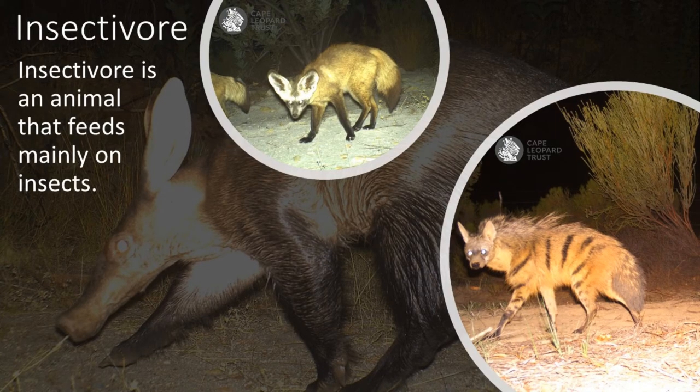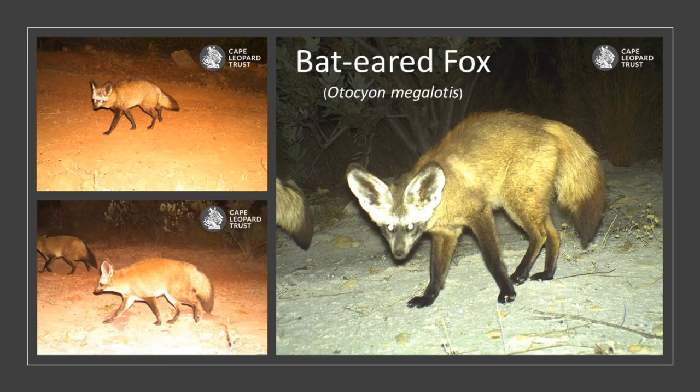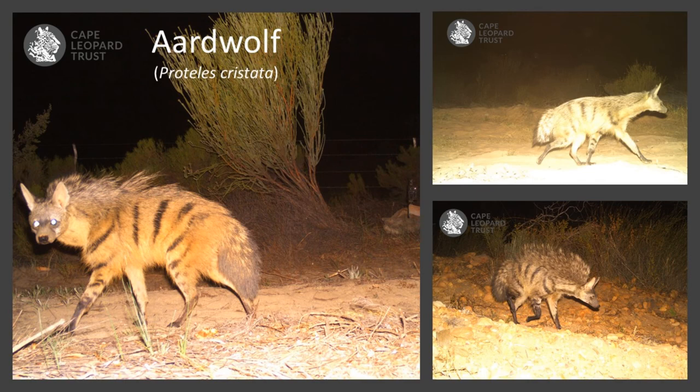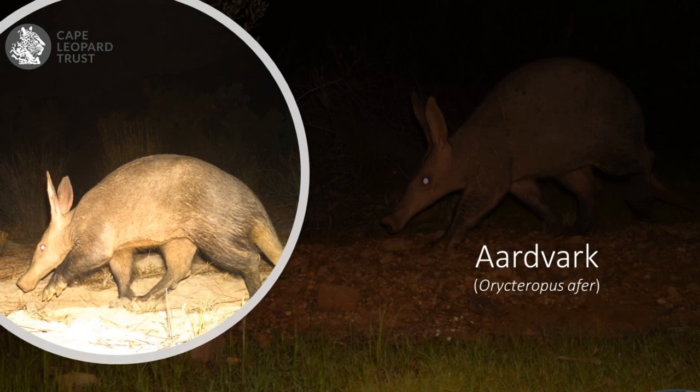Under carnivores we have a unique group of animals called insectivores. These animals feed mainly on insects. Examples of these are Bat-eared Fox, Aardwolf, and Aardvark. There are many more species of mammals in the Western Cape, but these were the ones we caught on camera.